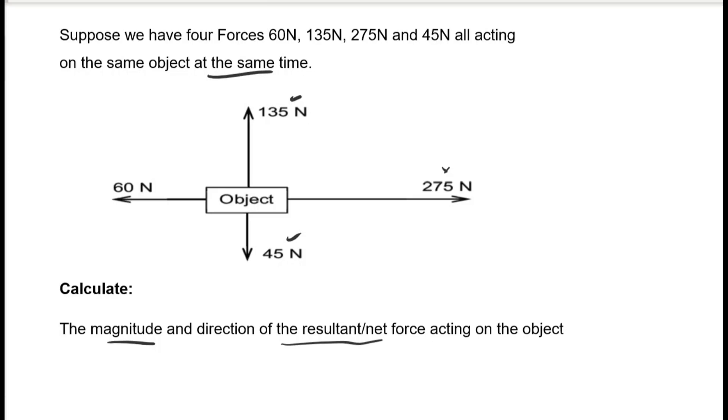But the 135N force and the 275N force are not collinear forces because they are perpendicular to each other. This means that the forces cannot be added vectorially, or we cannot simply find the vector sum of these two forces.